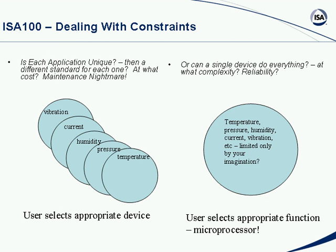Here are some of the constraints. One way to look at it: can we make a separate product for each measurement — a wireless thermocouple, a wireless pressure transducer, a wireless humidity device, a wireless vibration device? One could make each a separate standard. But that would be a maintenance nightmare — nobody in the user community would back that. The other approach is the classic microprocessor approach, where you put everything in a single box that can be configured as temperature, pressure, humidity, current, or vibration — limited only by your imagination.